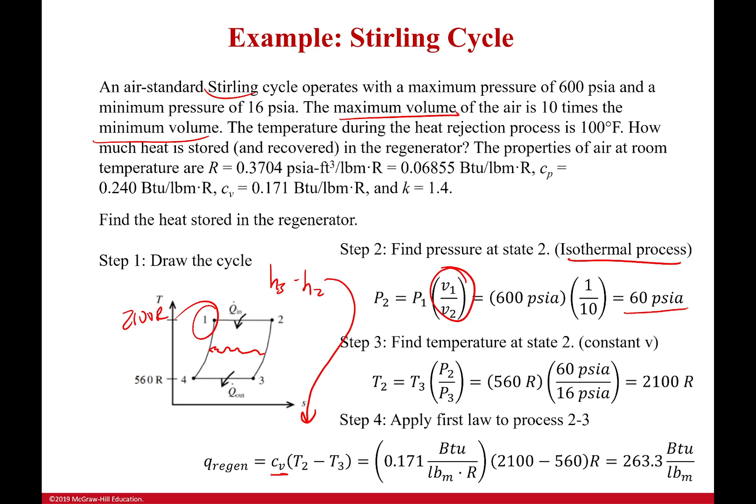Now, why do we use Cv? Well, it's constant volume processes from 2 to 3. And from 1 to 4, they are both constant volume. Since they're constant volume, we use Cv instead of Cp. So I plug those in, and I get my regeneration, the heat that's stored by regenerator of 263.3 BTU per pound mass. Just remember, that's because what's going on from here to here, that is the regeneration point.